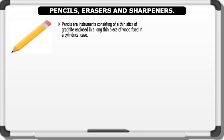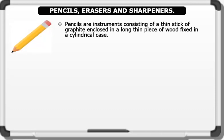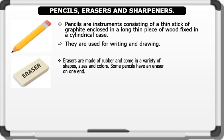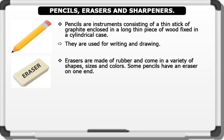Pencils, erasers, and sharpeners. 6. Pencils. Pencils are instruments consisting of a thin stick of graphite enclosed in a long thin piece of wood, fixed in a cylindrical case, that are used for writing and drawing. 7. Erasers. Erasers are made of rubber and come in a variety of shapes, sizes, and colors. Some pencils have an eraser on one end. They are used for removing marks from paper.